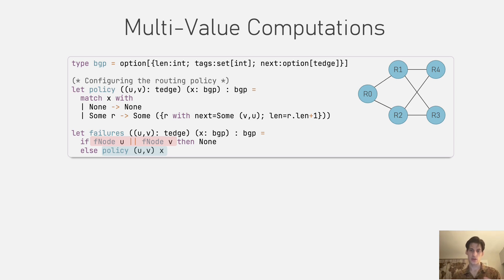For these computations, we introduce the concept of a multivalue, which are concrete computations that rely on some symbolic computation. So whereas the interpretation of a symbolic we used is a function from bit vectors to booleans, a multivalue is a function that can return any type of value, in this case BGP routes.